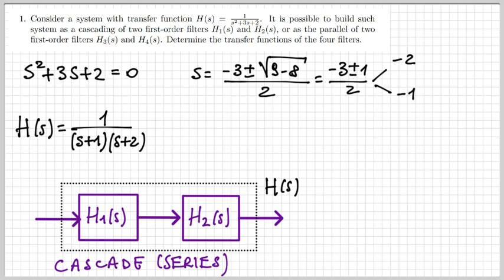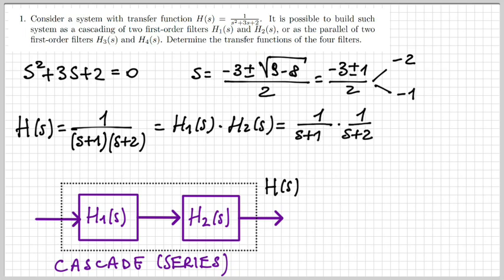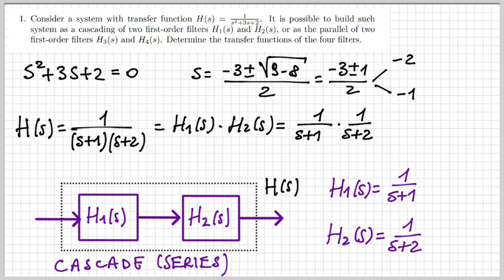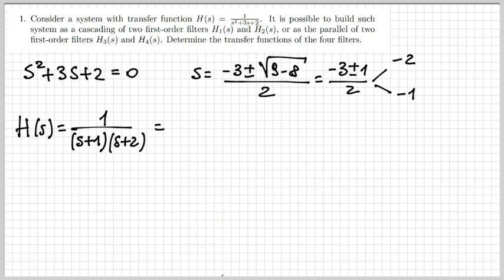Let's start with the first part: the cascade or series of two systems. I'm decomposing H(s) as the cascade of two systems H1 and H2. I write H(s) as a product, which is simply one over (s+1) times one over (s+2). That implies that 1/(s+1) and 1/(s+2) are the respective transfer functions of the two systems composing H(s).